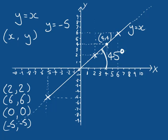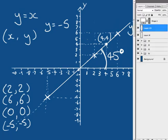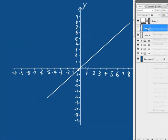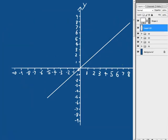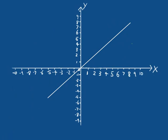But how do we get other lines? There are really only two properties of a line that we can manipulate. We can manipulate the angle from the X axis and we can manipulate the position of the line in Cartesian space. Let's start out with the angle. We need to relabel this line as Y equals X.